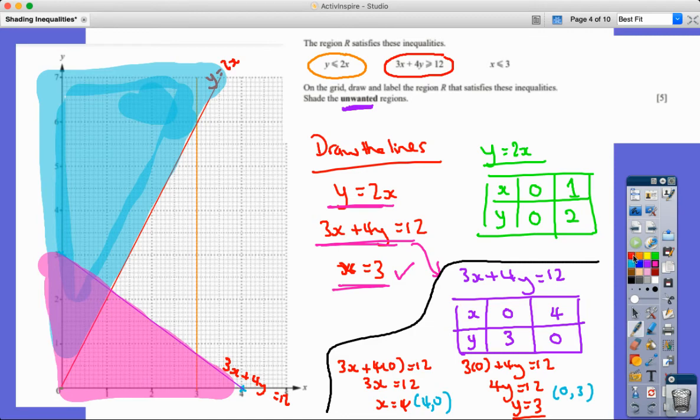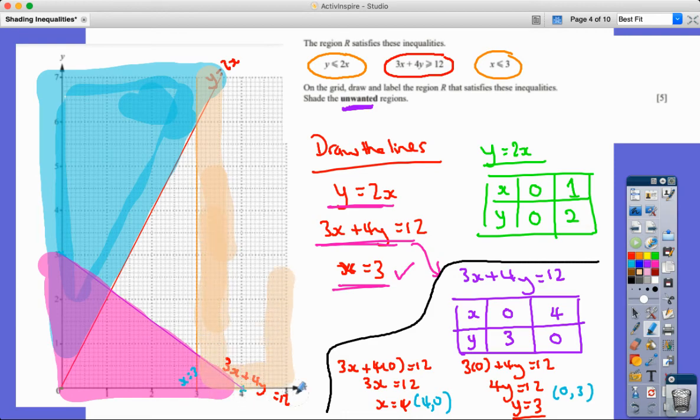And then the last one is this one. So I've got this final line which is x equals 3, and it's less than or equal to 3 that I want. So I'm going to shade out the stuff I don't want in this case. So it would be the stuff that's more than 3. Over here, all these x-coordinates, you can see are more than 3. I've got 4 and 5 and so on and so forth. So all this stuff I don't want. I only want x-coordinates less than or equal to 3.